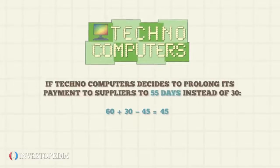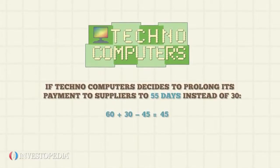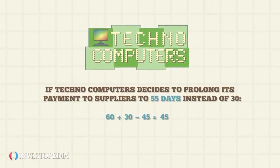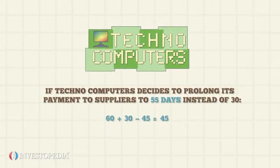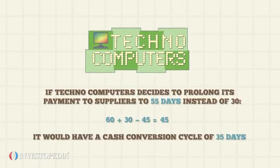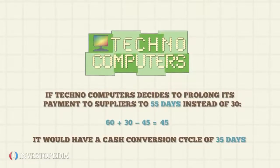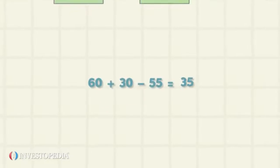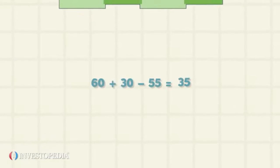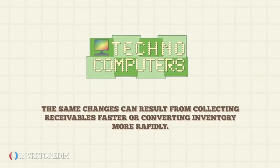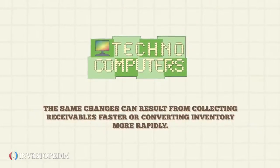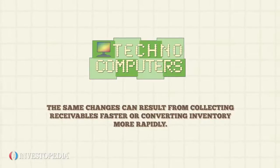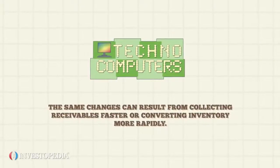If Techno Computers decides to prolong its payment to suppliers to 55 days instead of 30, it would have a cash conversion cycle of 35 days: 60 plus 30 minus 55. The same changes can result from collecting receivables faster or converting inventory more rapidly.